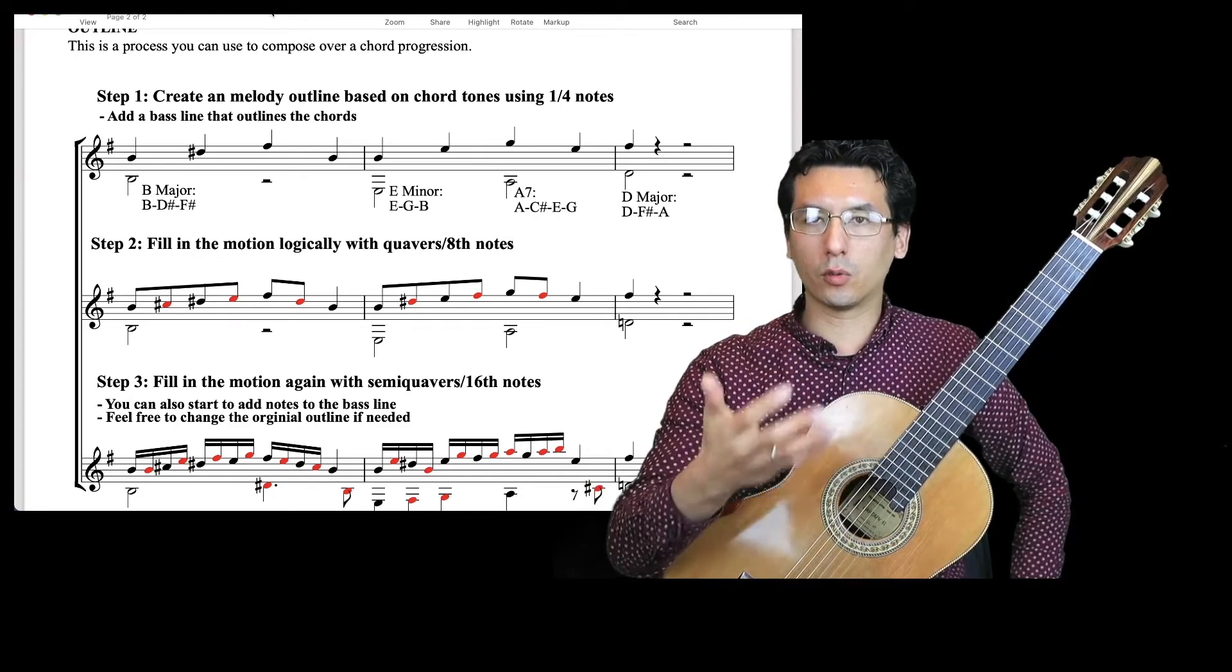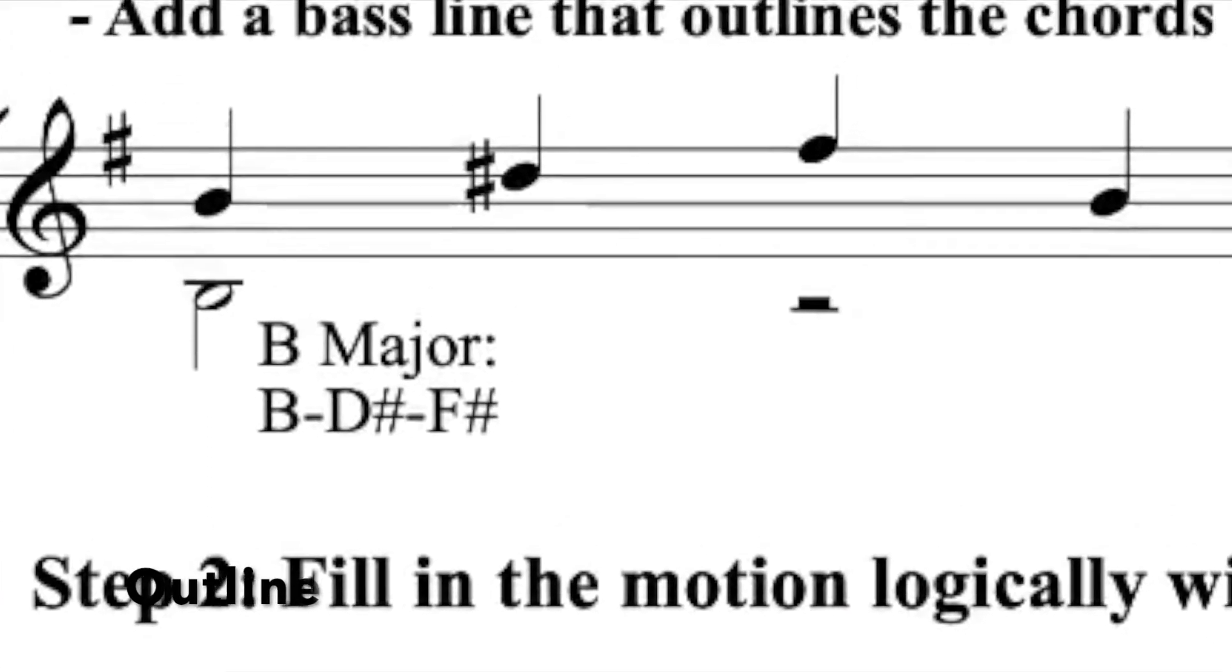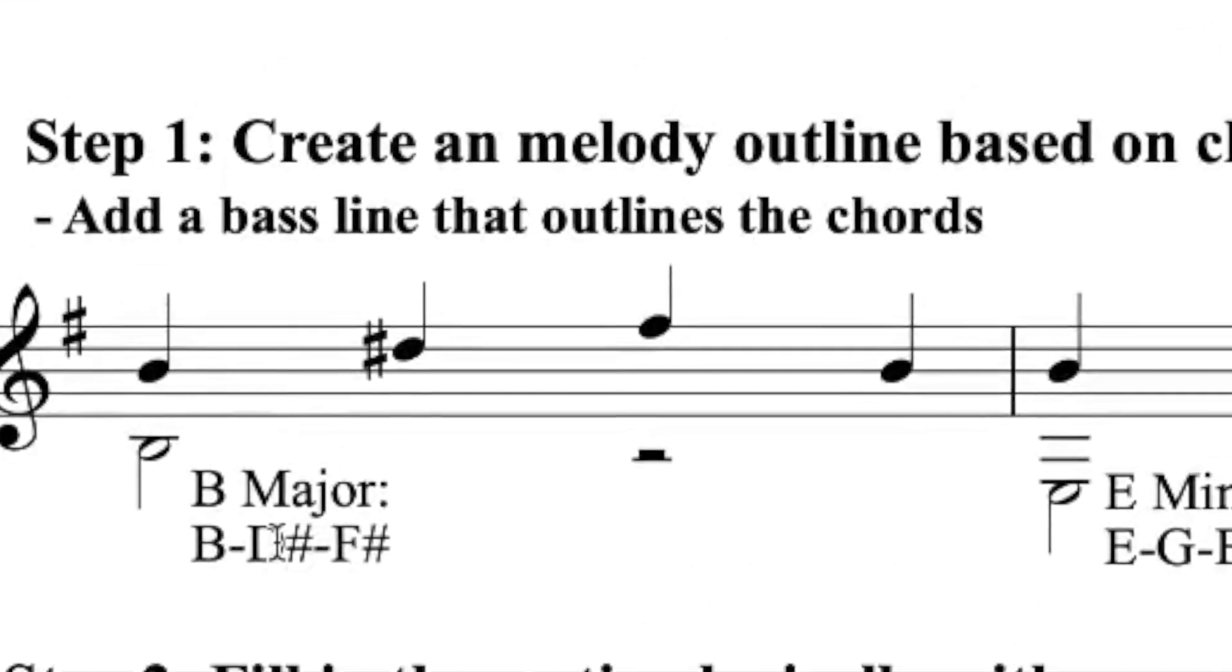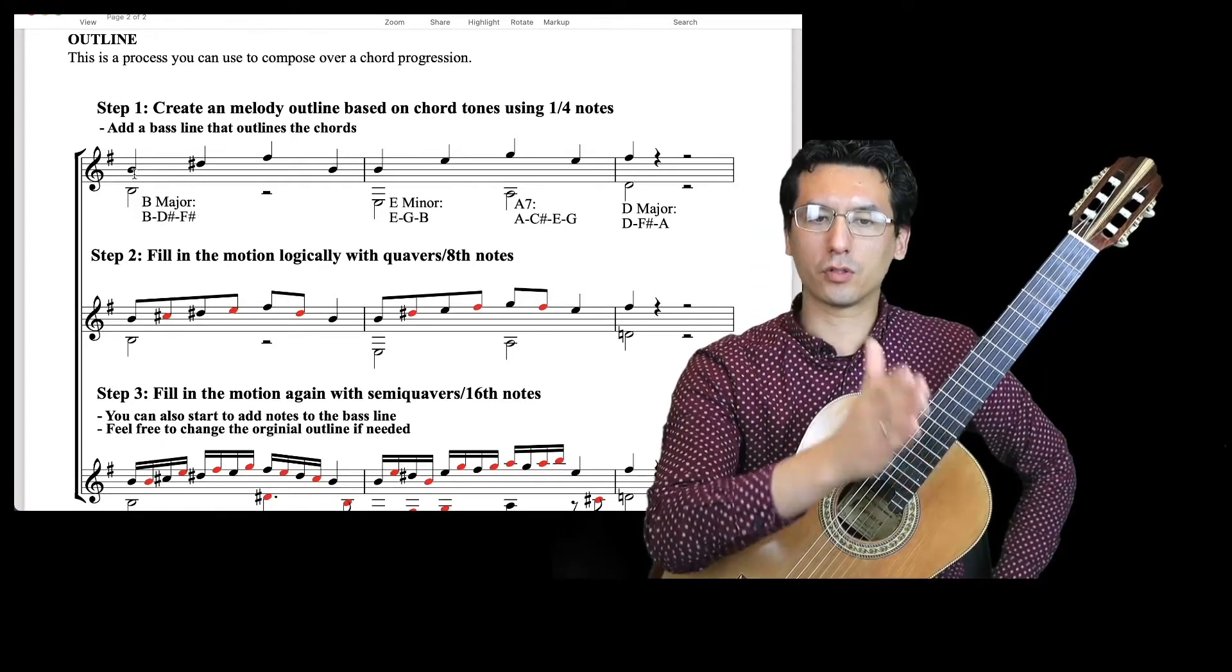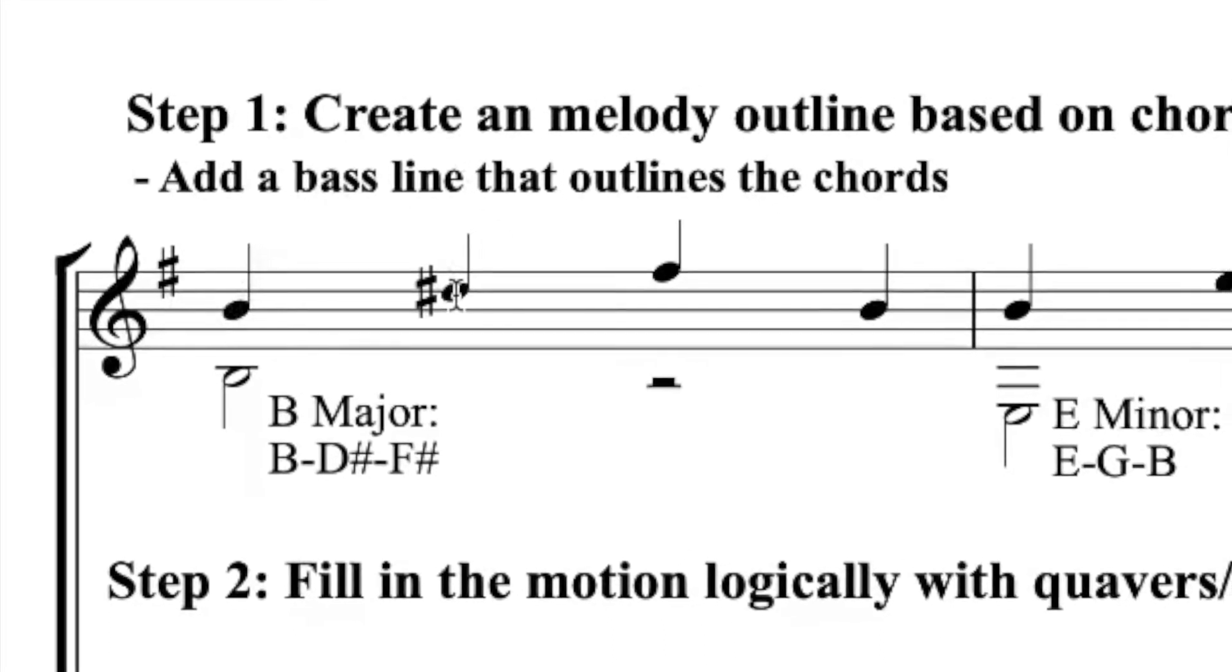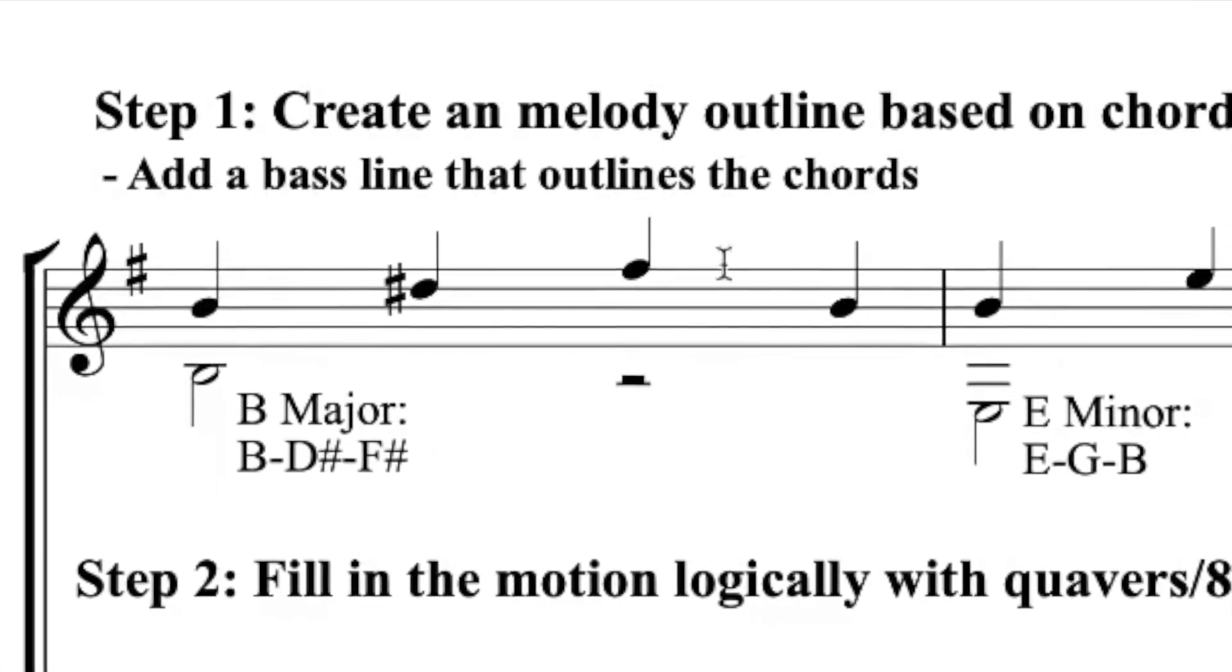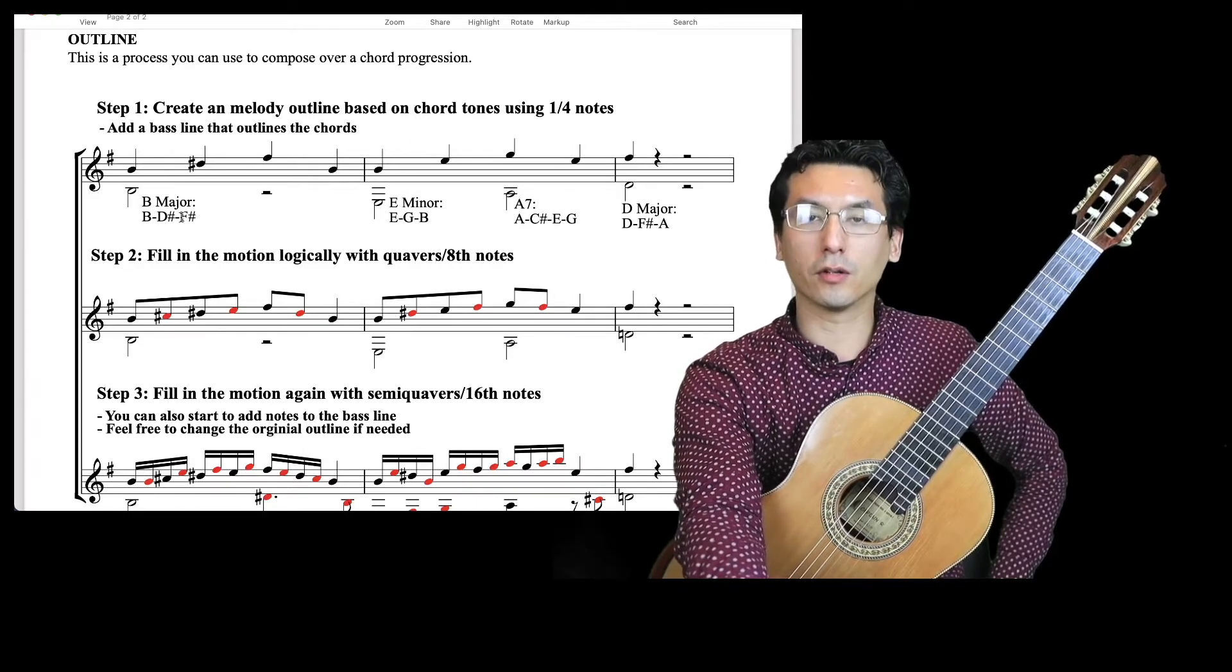A really quick and effective way to do this is by using an outline. An outline is where you take the notes of the chord that you want and you start with larger note values, preferably on the strong beat. So here we've got, we're in 4-4, so we've got four crotchets here, four quarter notes per beat. And those notes outline the notes of the chord.